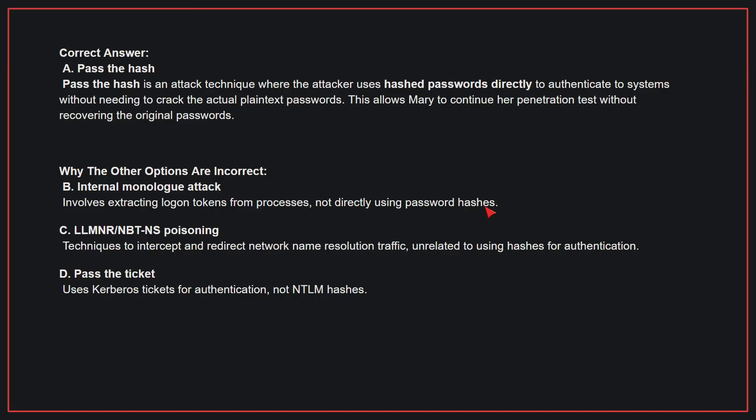Why the other options are incorrect: B, internal monologue attack — this involves extracting logon tokens from processes, not directly using password hashes. C, LLMNR and BTNS poisoning — these refer to techniques to intercept and redirect network name resolution traffic, unrelated to using hashes for authentication. D, pass the ticket — this uses Kerberos tickets for authentication, not NTLM hashes. Therefore, the correct answer is A.